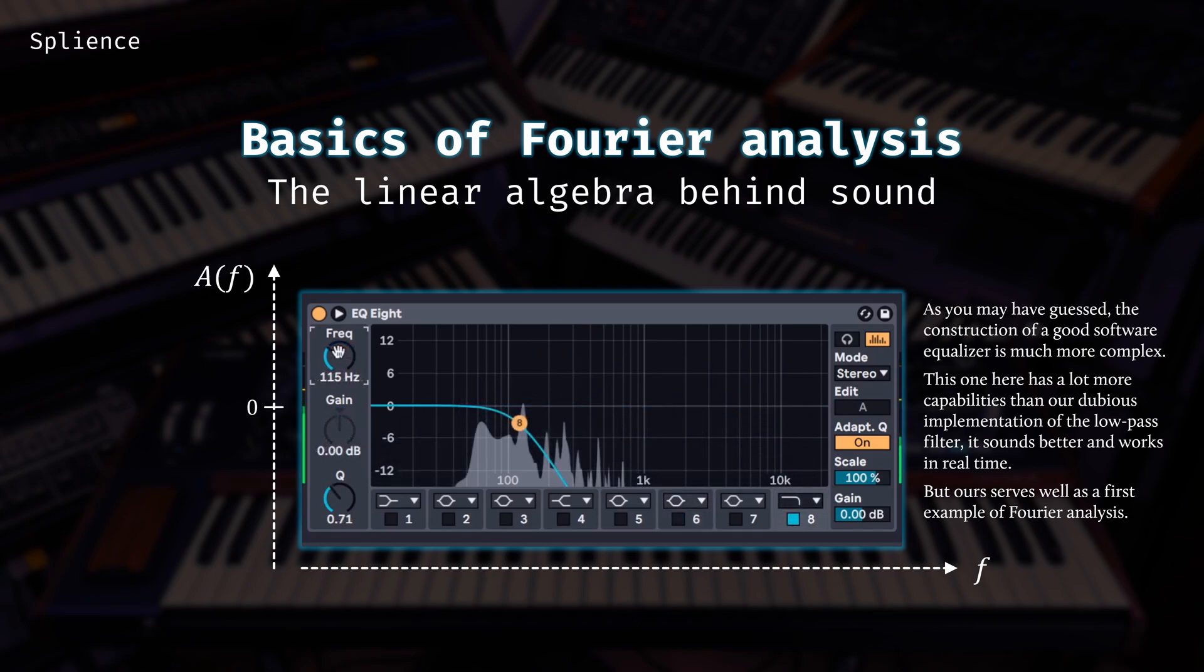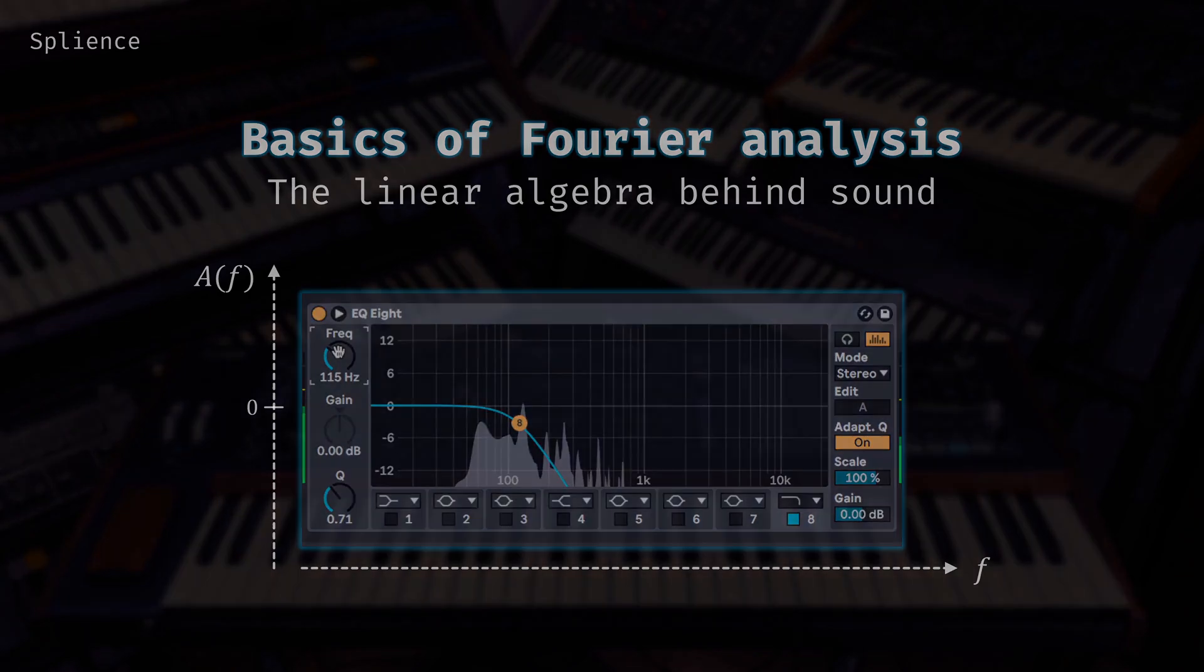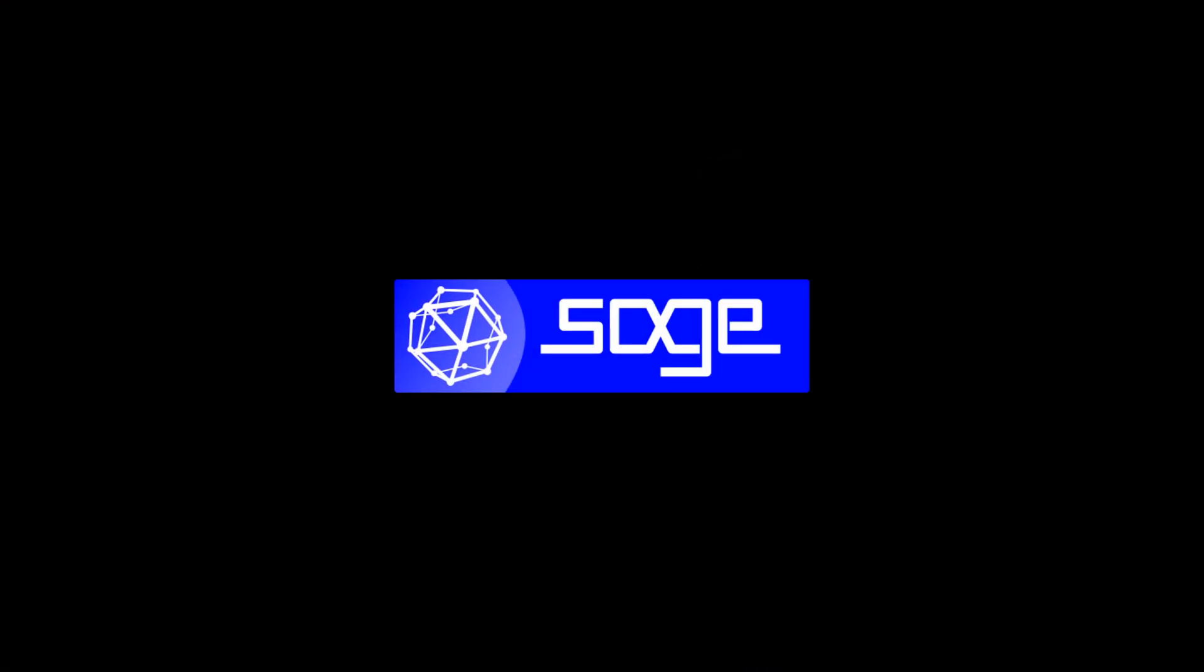And that's it! We've covered the basics of Fourier analysis, we've seen how linear algebra can help us in constructing this theory. And we also implemented a very basic low pass filter to only let low frequencies pass. So Fourier analysis is basically everywhere around you, not just for music, also for image processing. And there's so many use cases, and this is just the beginning. If you want to play around a bit more with SageMath, here's why we've used it.